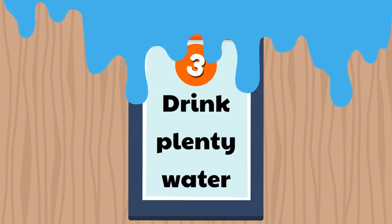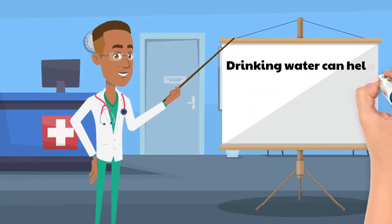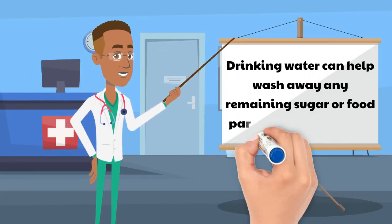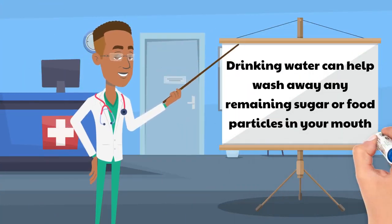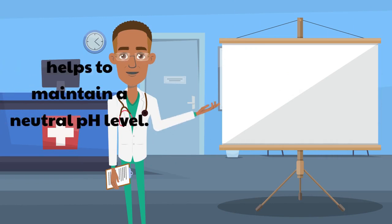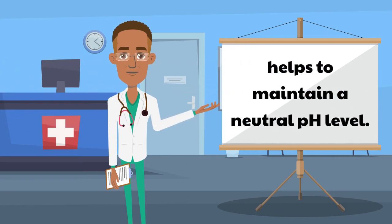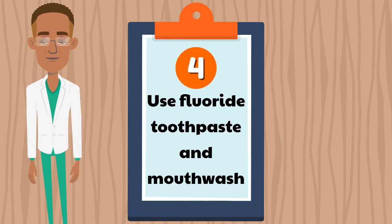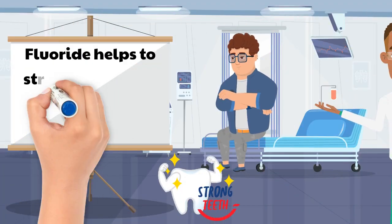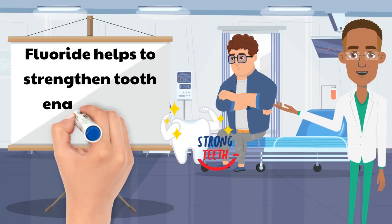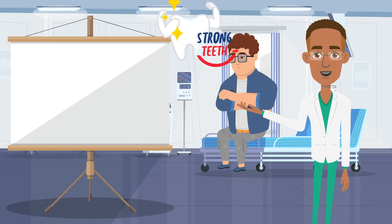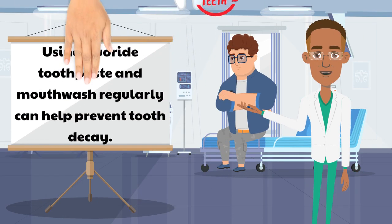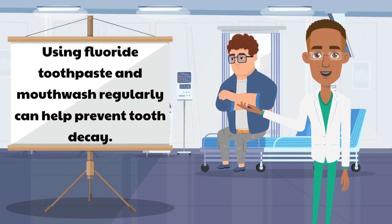Another way to prevent tooth decay is to drink plenty of water. Drinking water can help wash away any remaining sugar or food particles in your mouth and also helps to maintain a neutral pH level. A fourth way is to use fluoride toothpaste and mouthwash. Fluoride helps to strengthen tooth enamel and prevent cavities. Using fluoride toothpaste and mouthwash regularly can help prevent tooth decay.